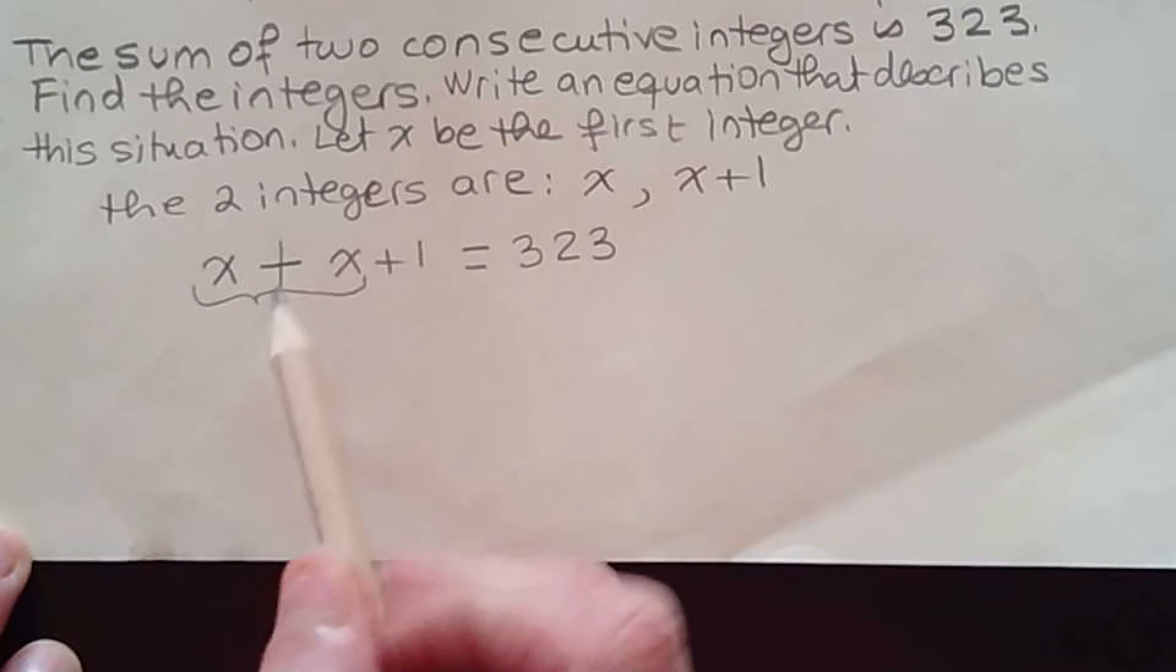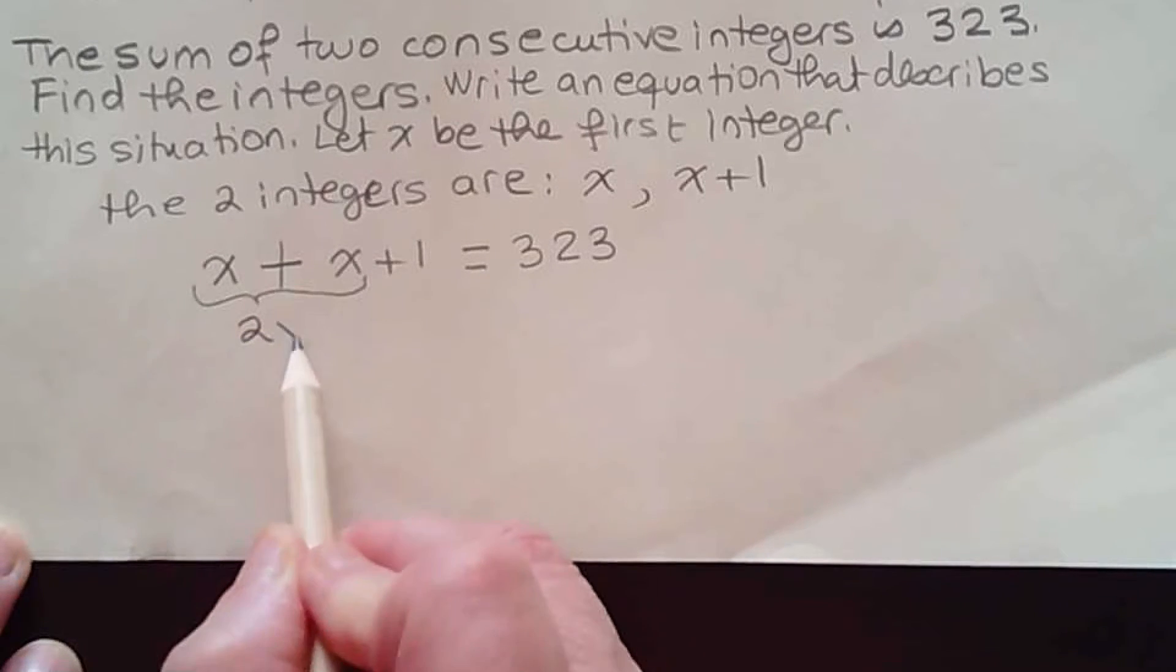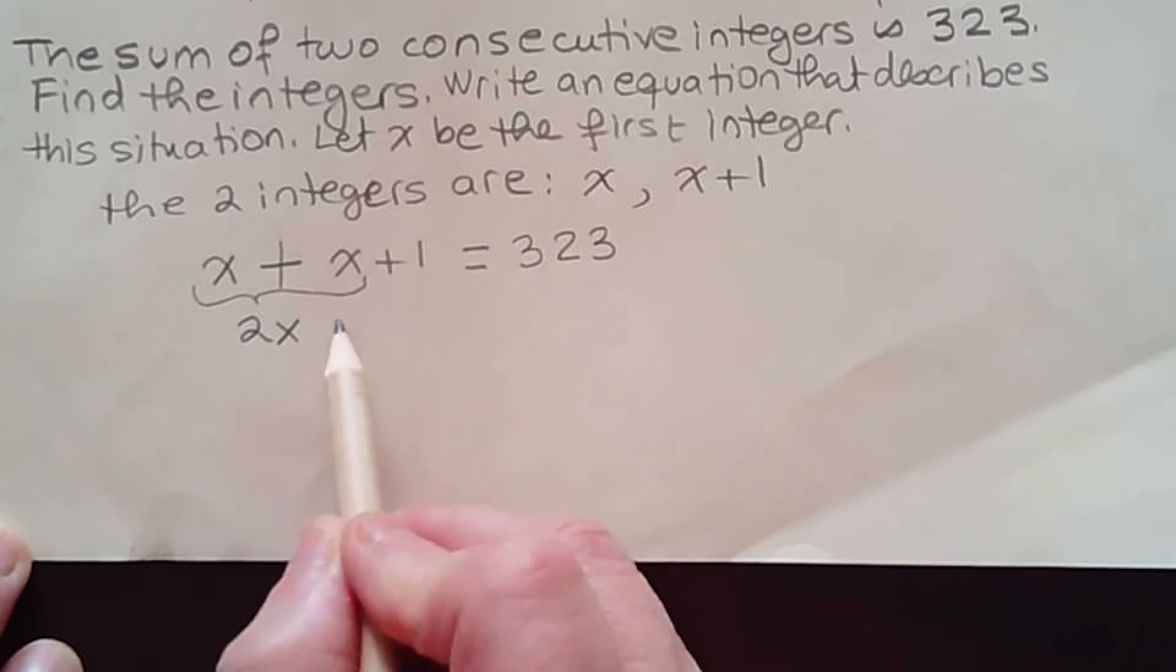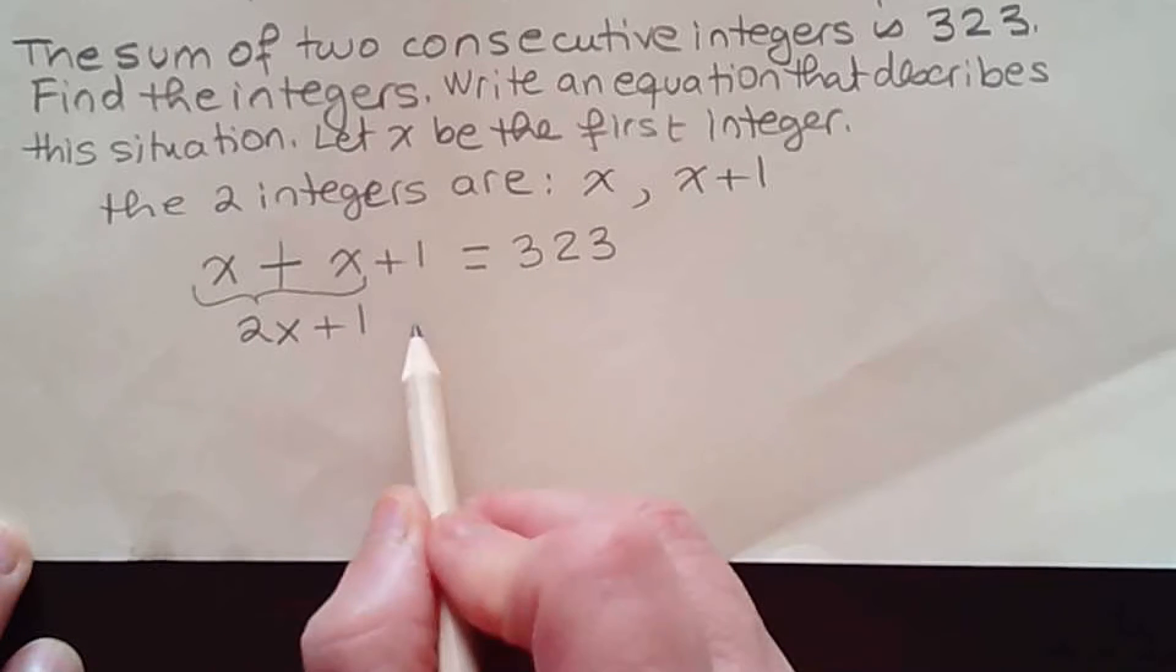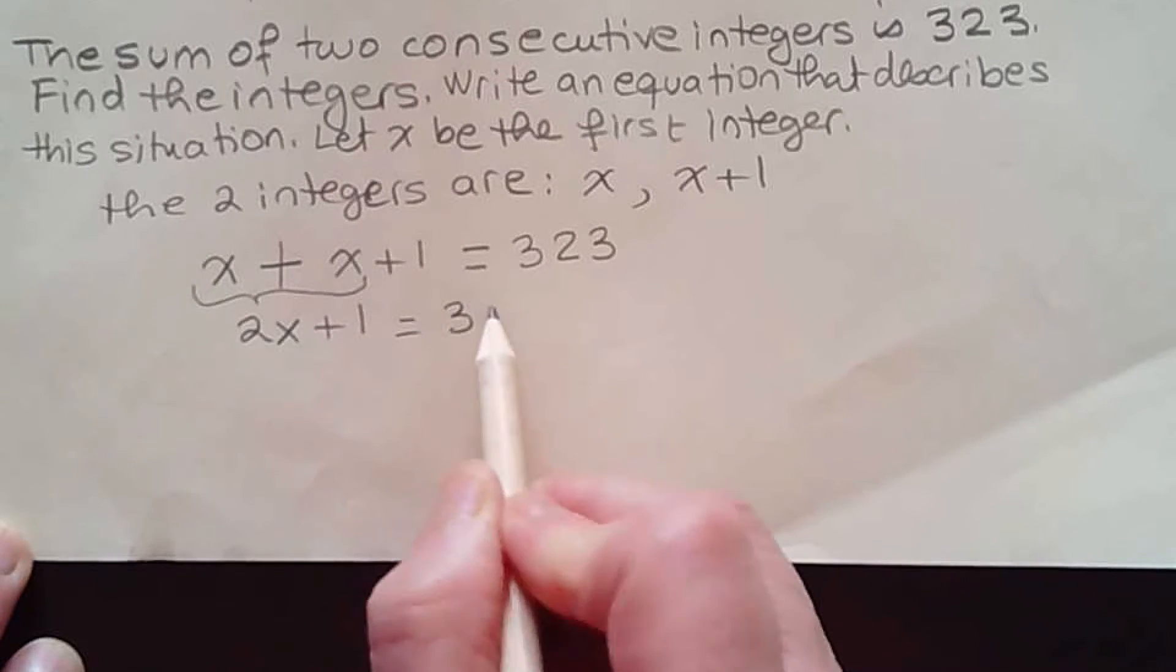First we need to simplify on the left side. We can combine x plus x. X plus x is 2x plus one equals 323.